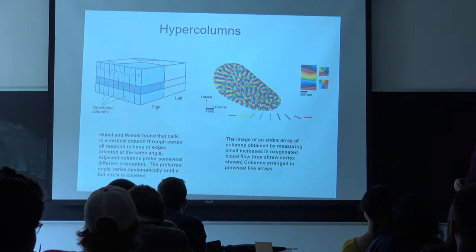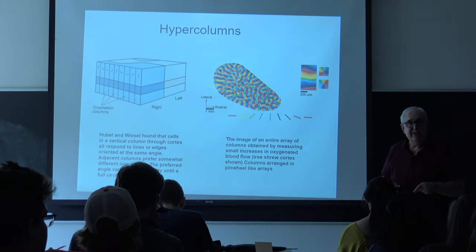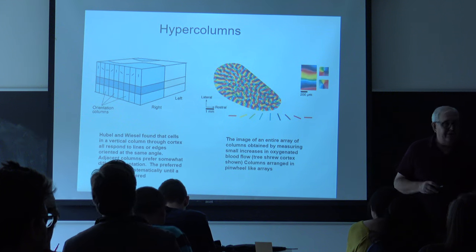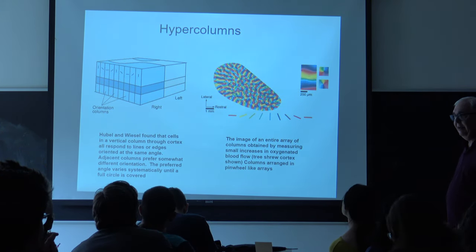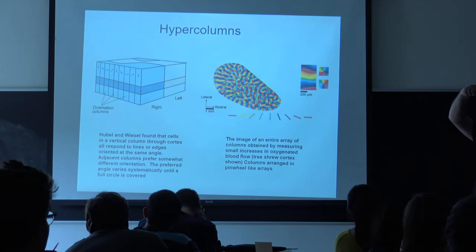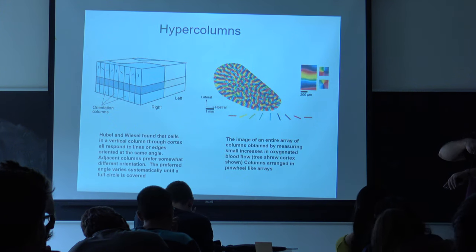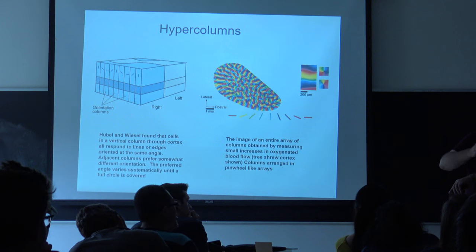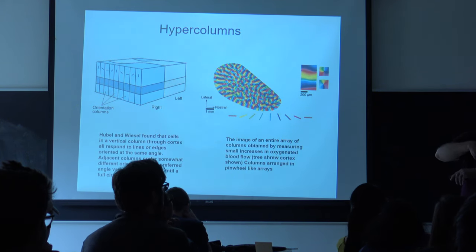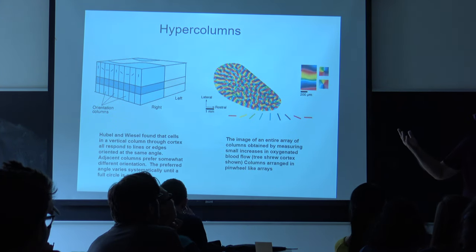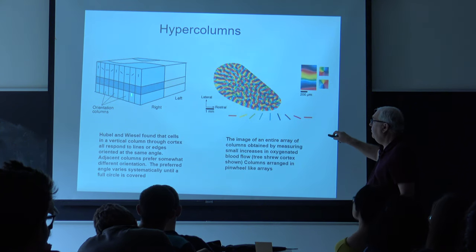A student asks whether there are cells sensitive to different orientations — the answer is yes, and they're organized in a very fastidious way. Hubel and Wiesel would lower an electrode down through different layers of the cortex. What they found is that along a given path of those electrodes at different depths, all the cells have the same orientation sensitivity. So within a column going down through the cortex, all cells are sensitive to the same orientation.